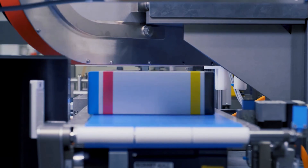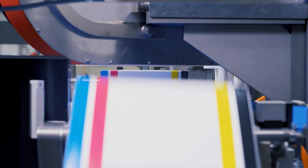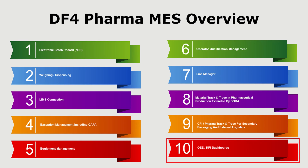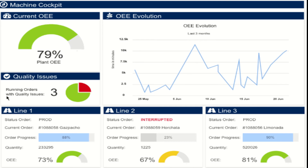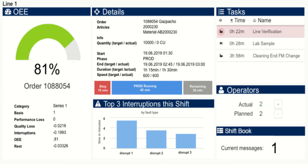DF4 Pharma MES includes dashboards to visualize Overall Equipment Effectiveness (OEE) and Key Performance Indicators (KPI), providing real-time data and insights on production performance. These OEE and KPI dashboards support process optimization and can help pharmaceutical companies identify opportunities for process improvement, reduce downtime, and improve overall efficiency.